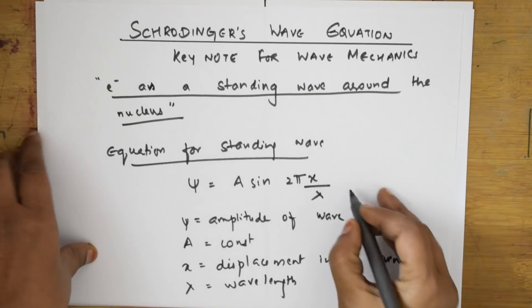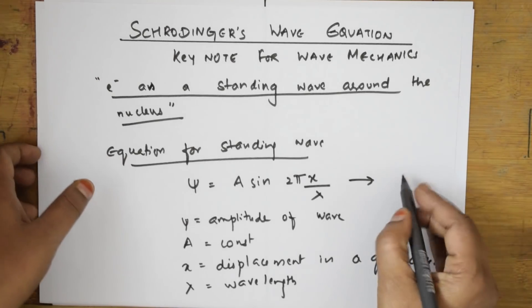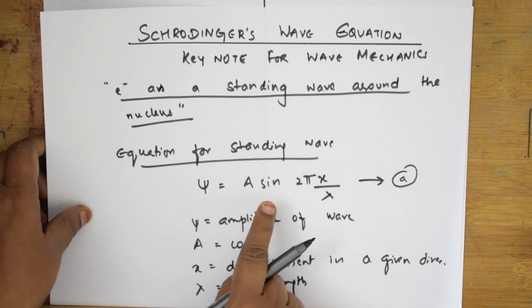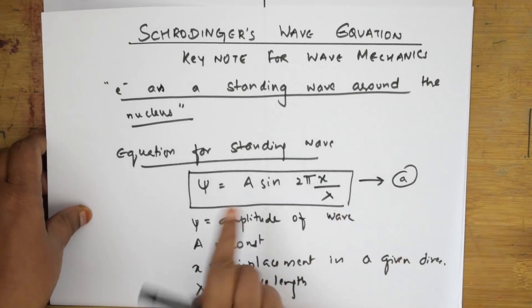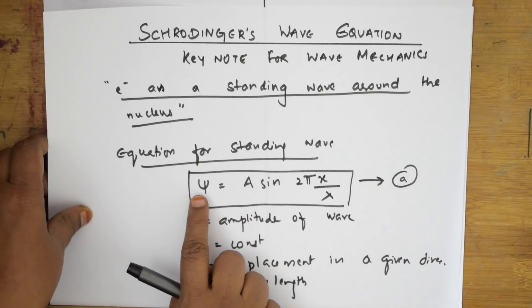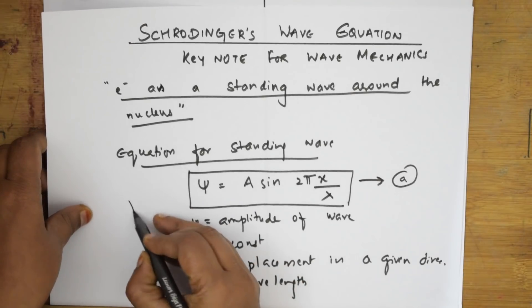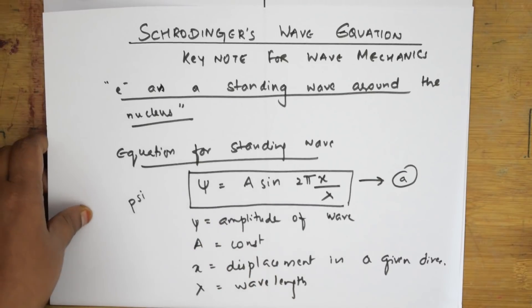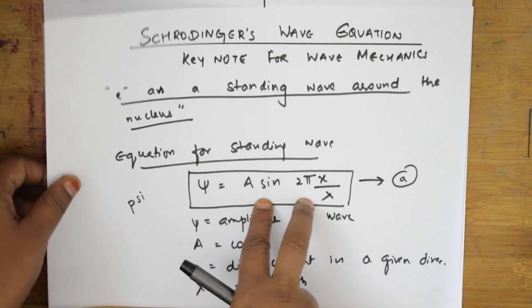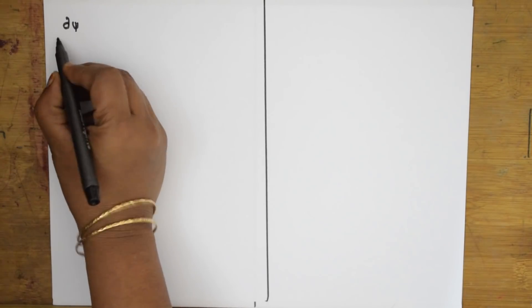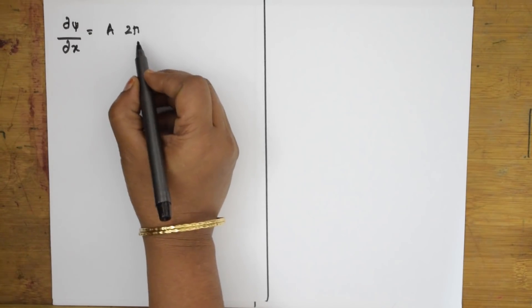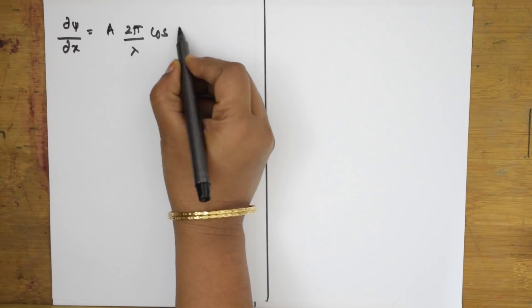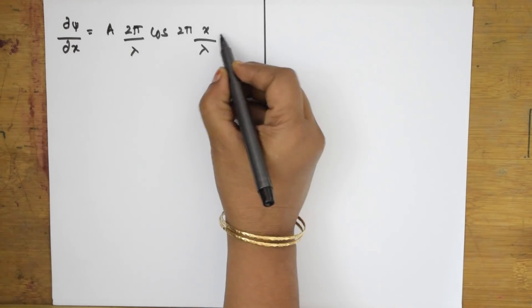Let us call this equation (A). We are going to differentiate this equation twice. ψ is the wave function — p is silent. Differentiating once: dψ/dx = A · (2π/λ) · cos(2πx/λ). Let us call this the first equation.